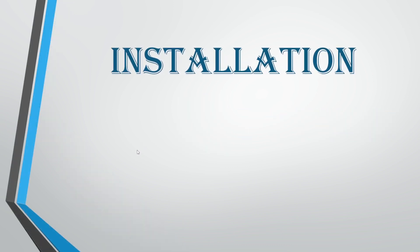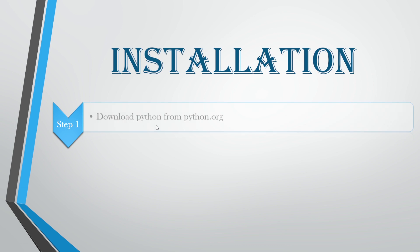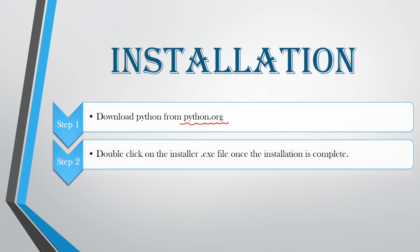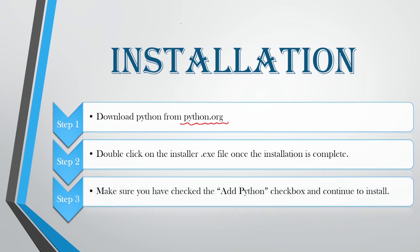In today's video, we are going to see about the installation process of Python. The first step is that we have to download Python from python.org. I'll also be linking it in the description. The second step is to double click on the installer .exe file once the download is completed, and then install it with the normal process. Make sure you have checked the 'add Python' checkbox and continue to install.